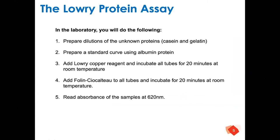In the first instance, she prepared dilutions of the unknown proteins — casein, gelatin — and these went into test tubes 6, 7, and 8. She also prepared a standard curve, with incrementally larger volumes of protein across tubes 1 to 5. She added 4 mils of the Lowry copper reagent, incubated for 20 minutes, then added 0.4 mils of the folin and incubated another 30 minutes. Finally, she read the samples at 620 nanometers.